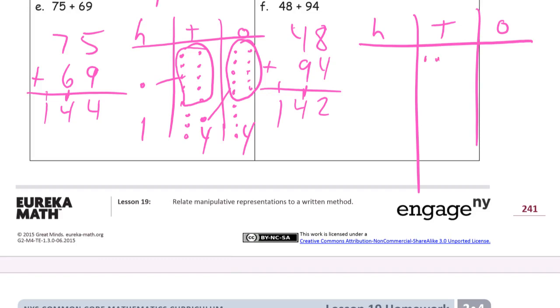So 48 is 4 tens and 8 ones, and then the 94 is 9 tens and 4 ones. That's 10 ones, so it's a 10, and 10 tens makes 100. So we have 100, we have 4 tens, we have 2 ones, there's your 142.